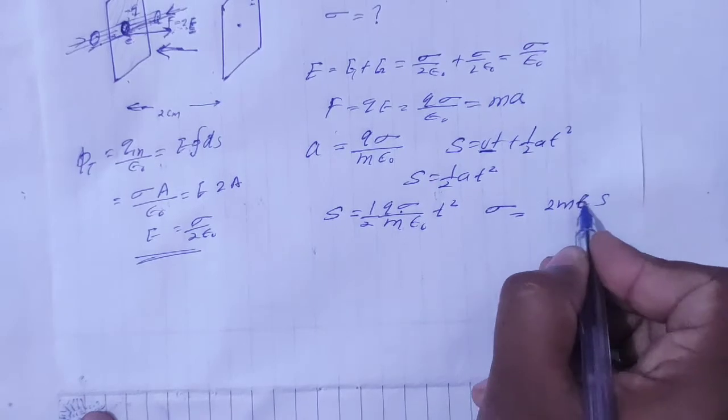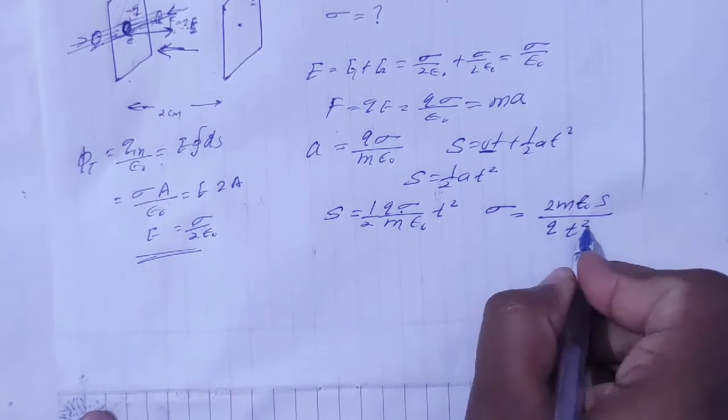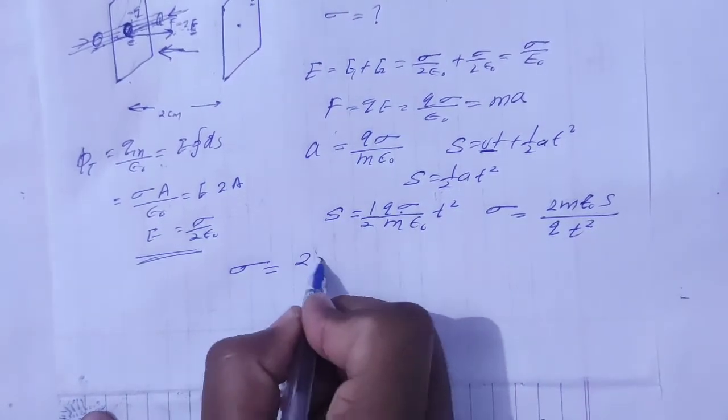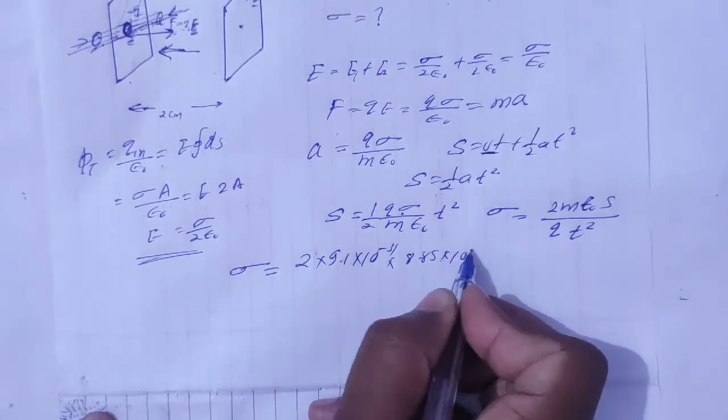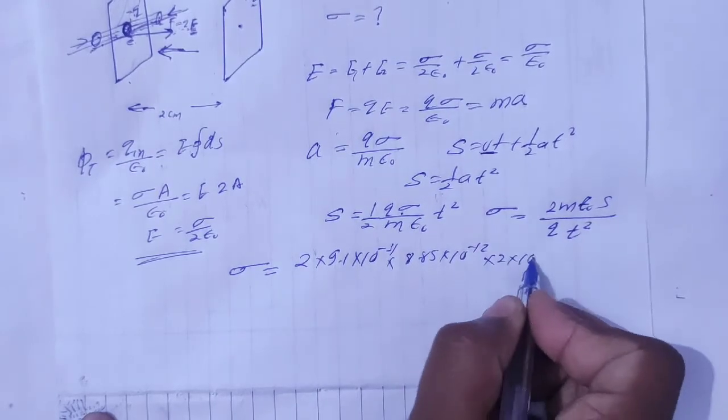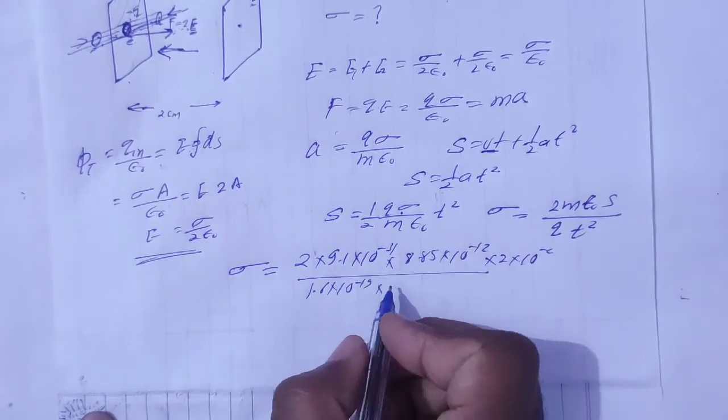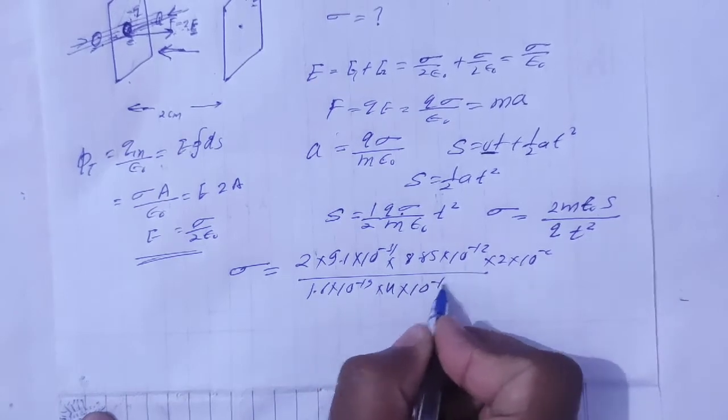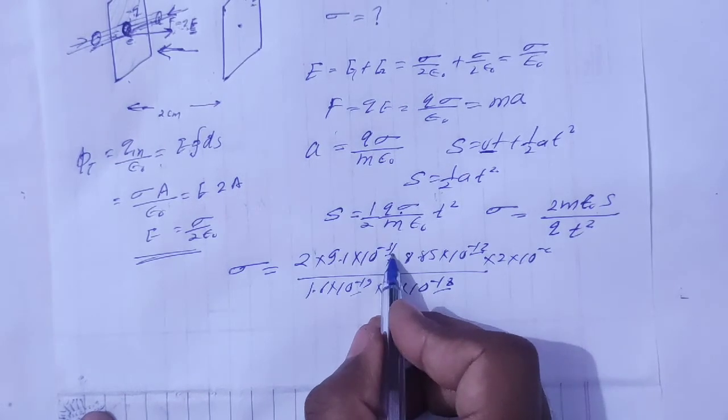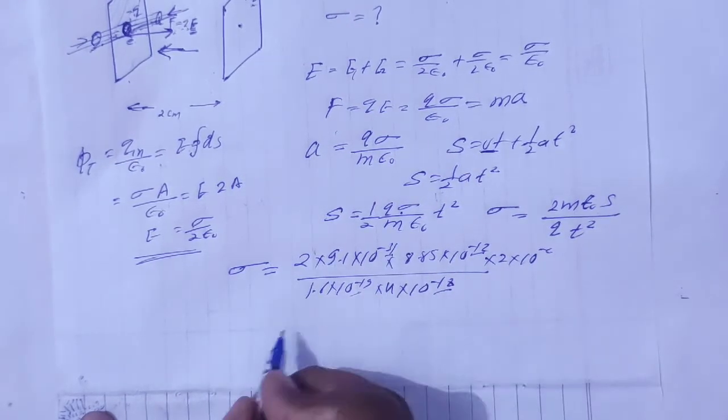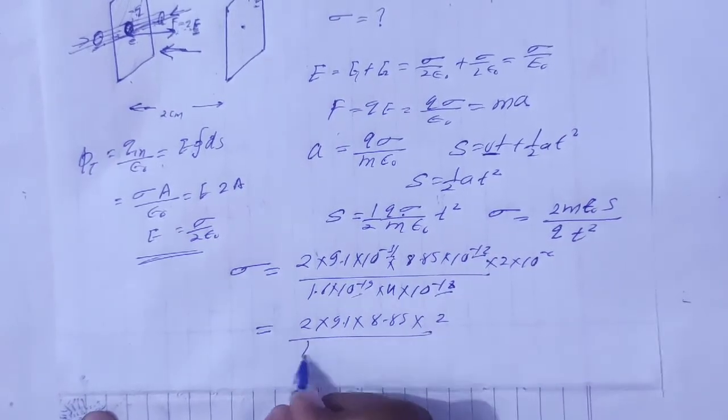Value put karata hai sigma is equal to a jayega 2m kitna 9.1 into 10 ki power minus 31 epsilon naught 8.85 into 10 ki power minus 12 s kitna hai 2 cm 2 into 10 ki power minus 2 q kitna hai 1.6 into 10 ki power minus 19 t kitna hai t square yani 4 into 10 ki power minus 12. S kitna hai ga 2 into 9.1 into 8.85 into 2 upon 1.6 into 4.